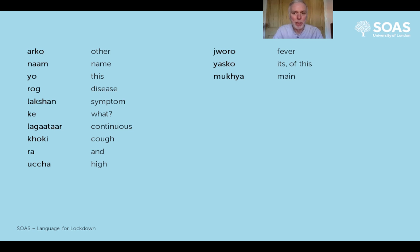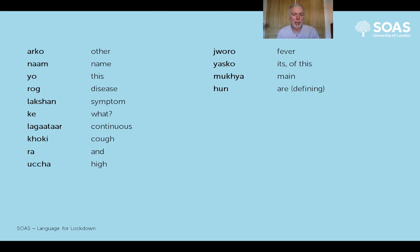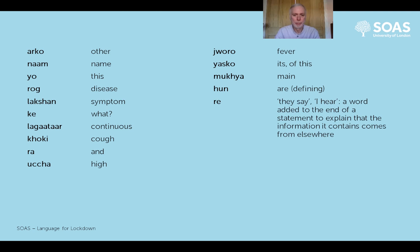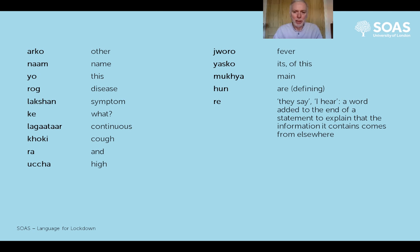'Mukya' is an adjective meaning the main or principal thing. 'Hun' is another form of the verb 'to be' but plural - so if it's singular it's 'ho' when you're defining it, and if it's plural it's 'hun'. Then there's the very nice little word 're', which you can add to the end of a statement to say 'this is information that I've gleaned from somewhere else' - 'they say', 'I've heard', 'apparently'. Very widely used in Nepali - a very neat way of conveying something quickly that takes a little longer in English.